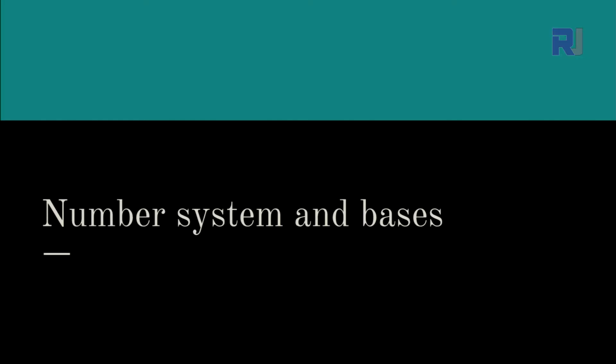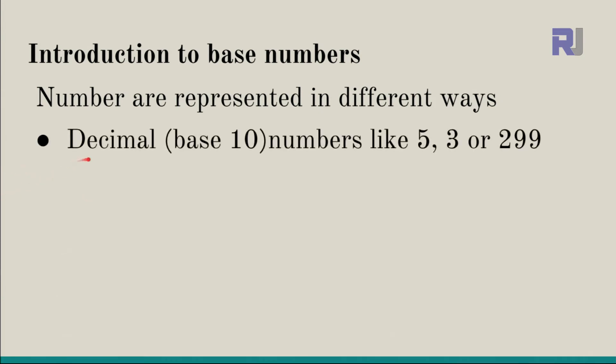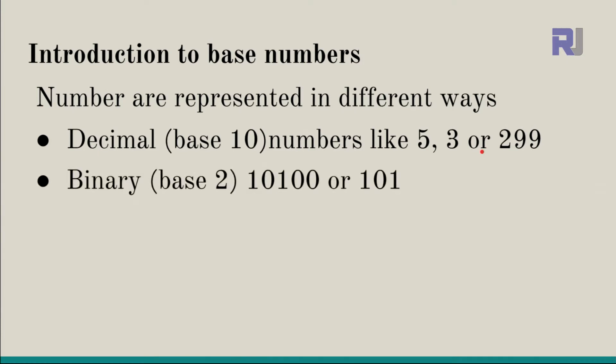In this lecture we are going to learn about number systems and bases. The numbers we use in financial calculations and daily transactions are based on decimal, or base 10. In base 10, numbers go from 0 to 9, and after reaching 9 we move to the next place value. For example, 53 or 299 are decimal numbers.